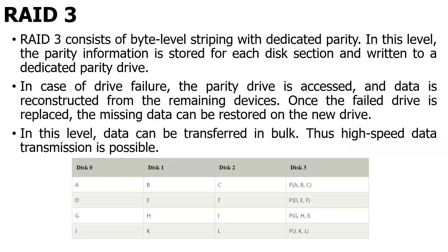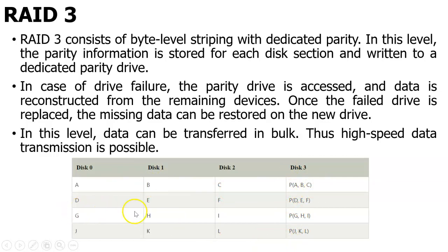Moving on to the third thing, I have byte-level data striping. Instead of storing a single separate disk for storing the data, I am creating an array-wise parity bit with only one disk to store the parity bit. So instead of creating 3 disks for parities, I have only one disk for storing the parity bit. A, B, C will be stored in one disk; D, E, F will be stored in one disk. Similarly, as a bulk of data, the parity bit will be stored here.